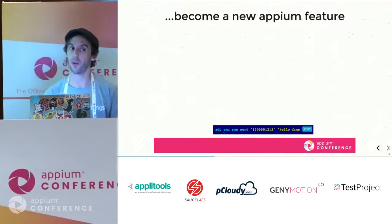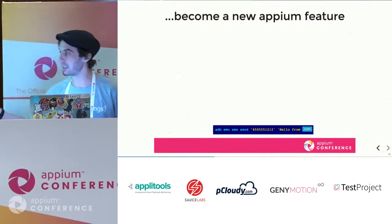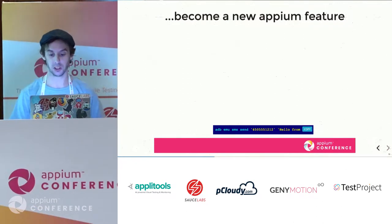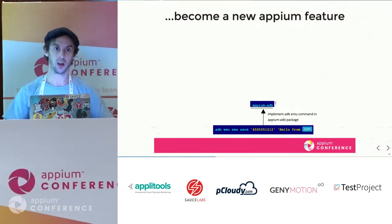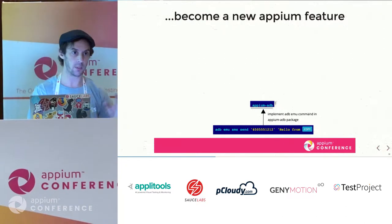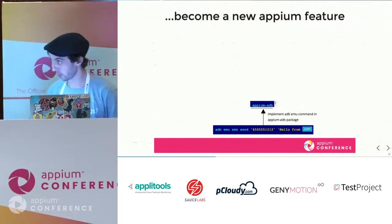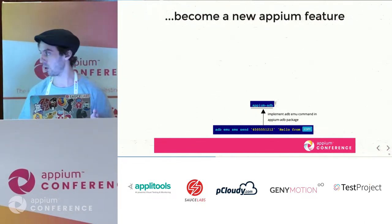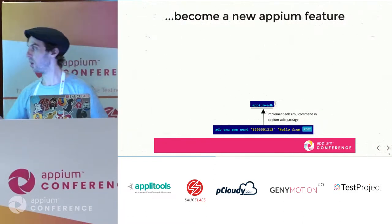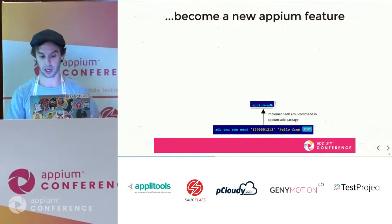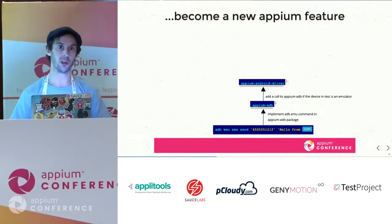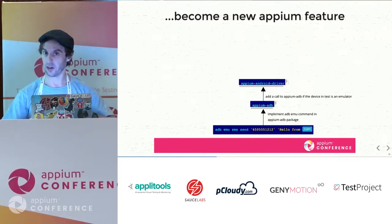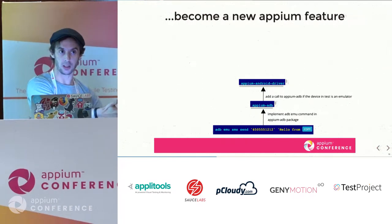But that's the command line. How does that become an Appium feature? The first thing you need to update is appium-adb. Appium-adb is a wrapper around every ADB command that communicates with the device. Next, you go up a level to the Appium Android driver, which is responsible for calling these commands and also ensuring that ADB EMU commands are not called on a real device — only on an emulator. This triggers the ADB command line.